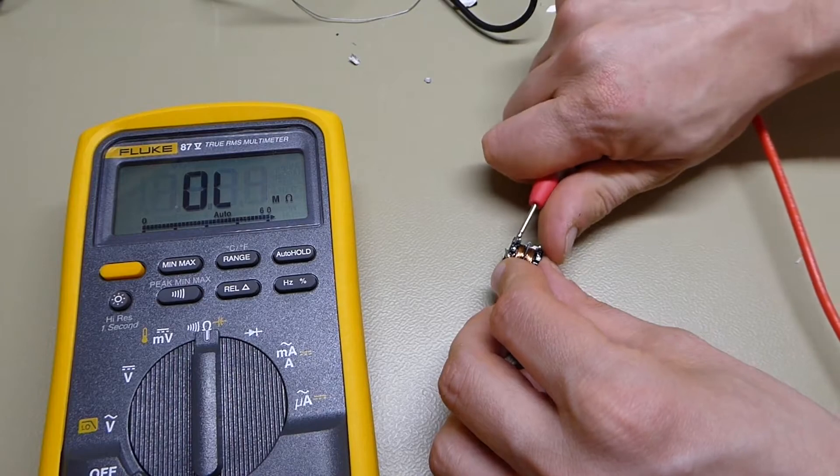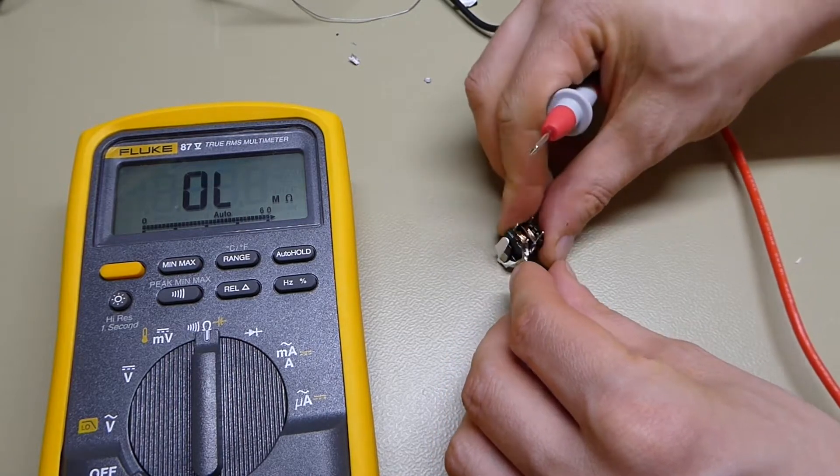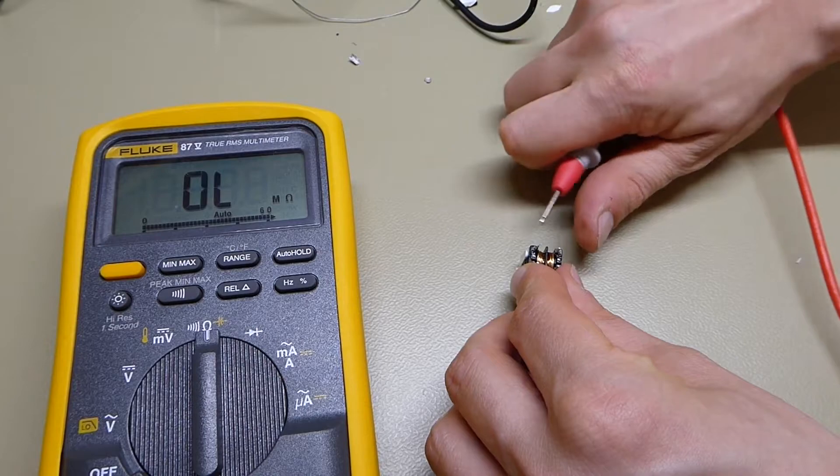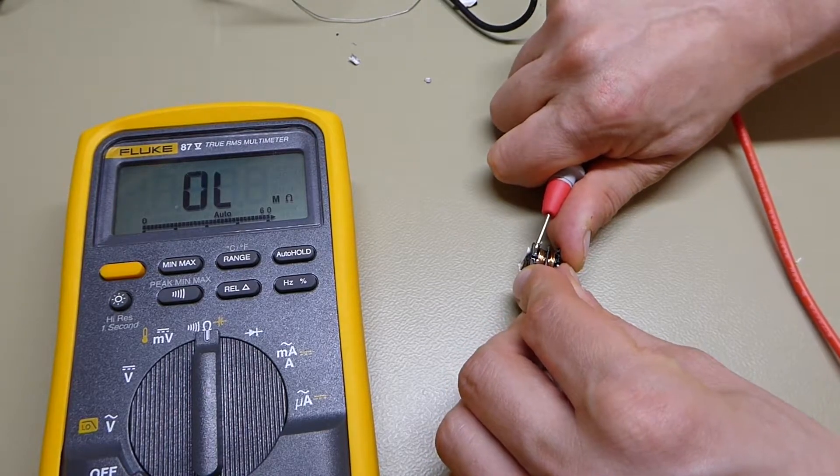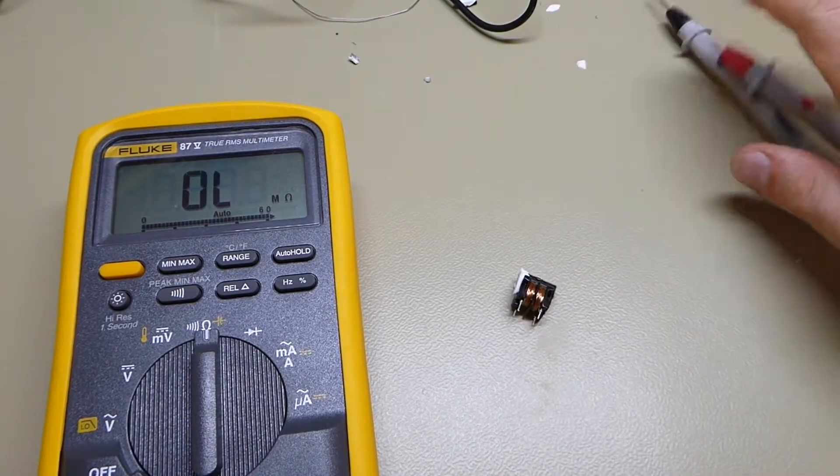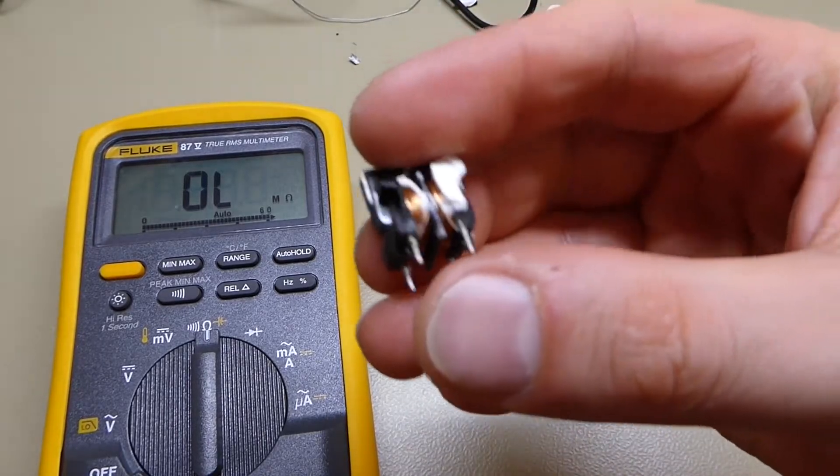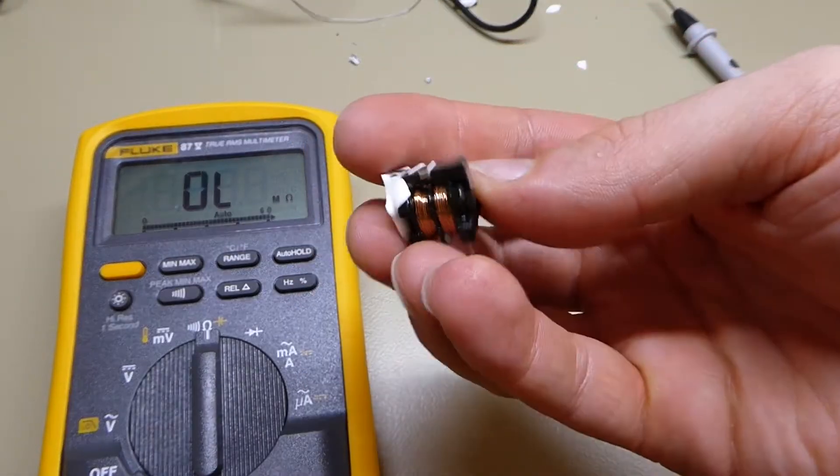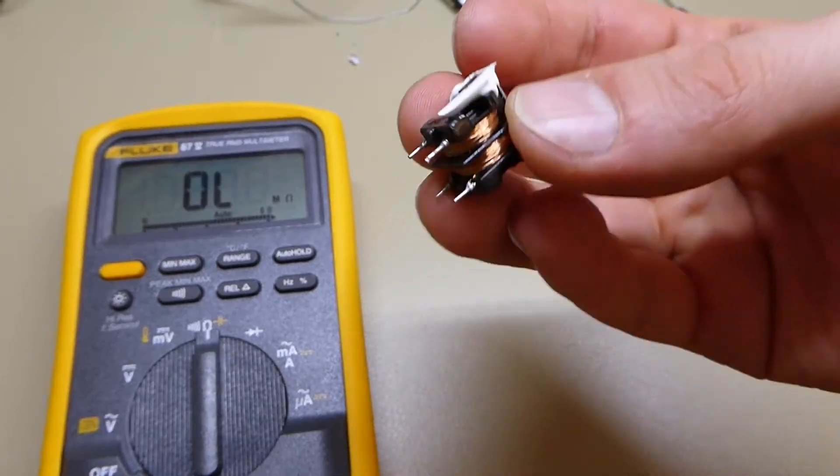Let's see, between here nothing at all. And between here also nothing at all. So I think we need to take a very close look and maybe take it apart to see why it's failing on both windings.